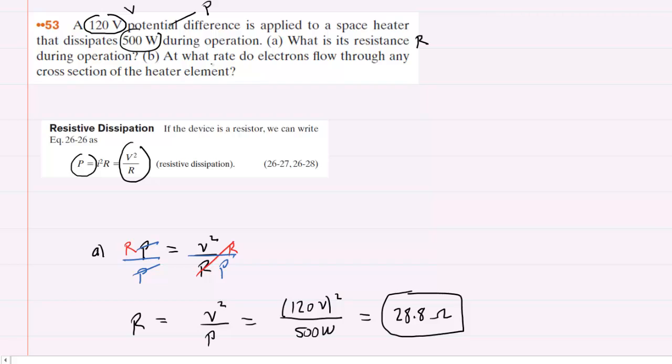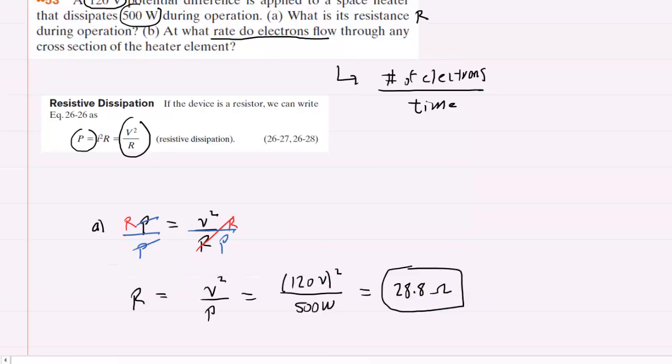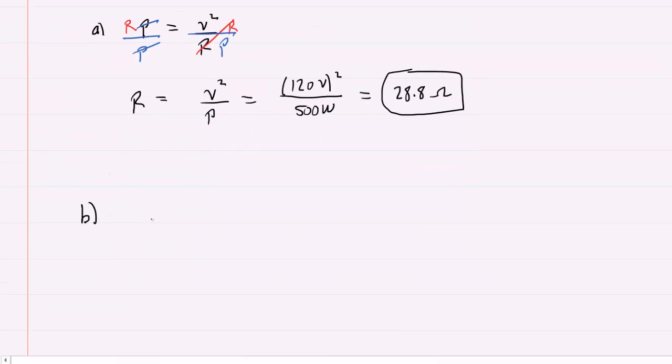In part B, we are asked to determine the rate at which electrons are flowing. We can look at that quantity as the number of electrons per second, or the number of electrons per unit time. To get that quantity, it will be beneficial to first find the current, which is symbolized by I.